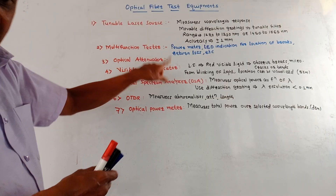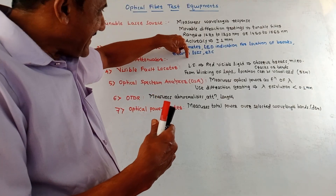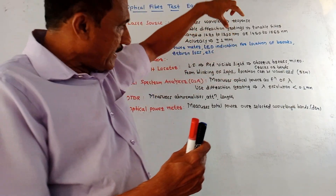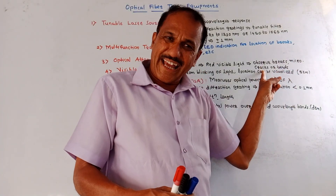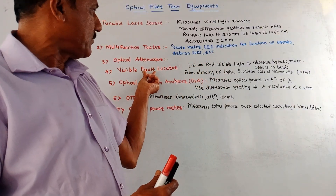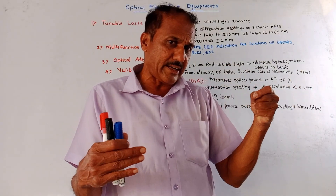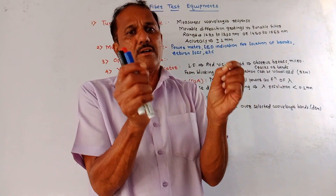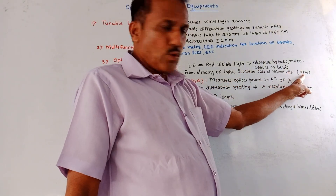Next is visible fault locator. As the name indicates, it gives visualization of the exact fault location. It consists of a semiconductor-type laser source which emits visible light. This visible light is used to observe breaks, micro cracks, or micro bends in the fiber optic cable. If there are any breaks or cracks in the fiber optic cable, light gets reflected from those cracks or breaks, and that reflected light causes blinking of the light coming from the laser source, giving the indication. The location can be visualized up to five kilometers distance.